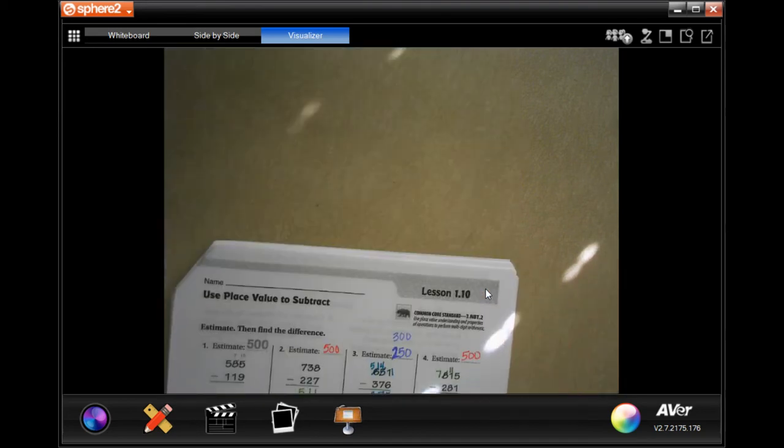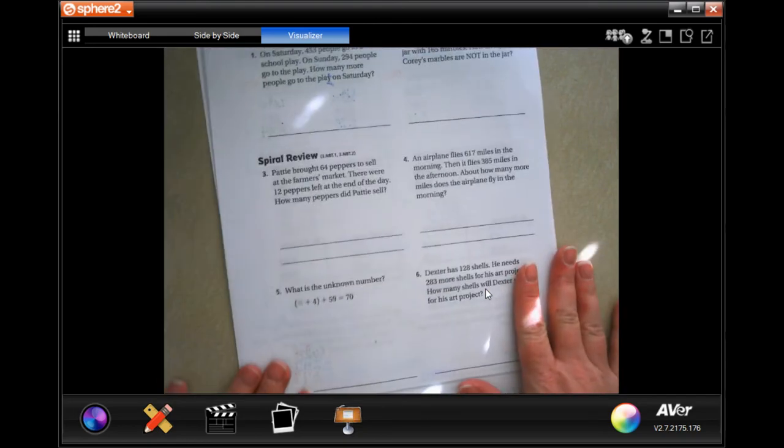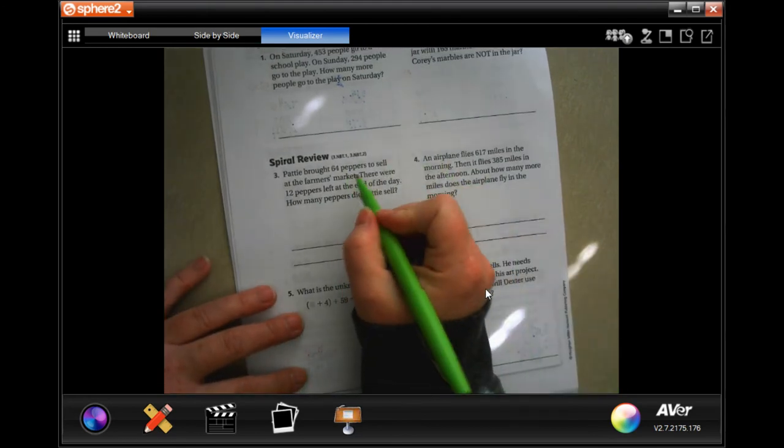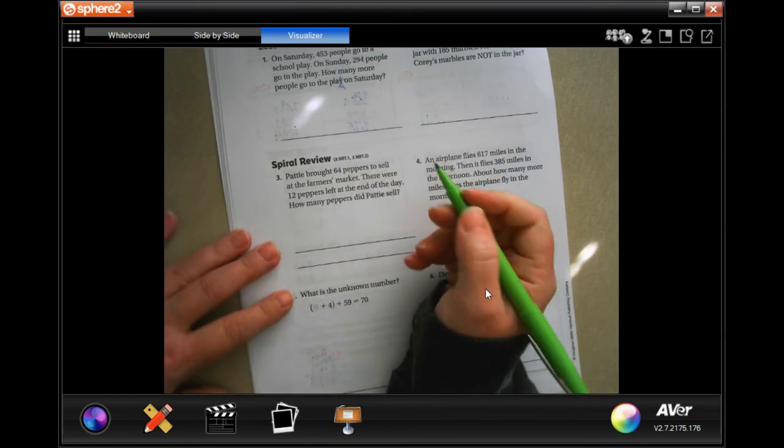All right, we're going to go over onto the back where you guys are going to do the lesson check, just like always, and we're going to go down to this power view. So, it says Patty bought 64 peppers to sell at the farmer's market. There were 12 peppers left at the end of the day. How many peppers did Patty sell?